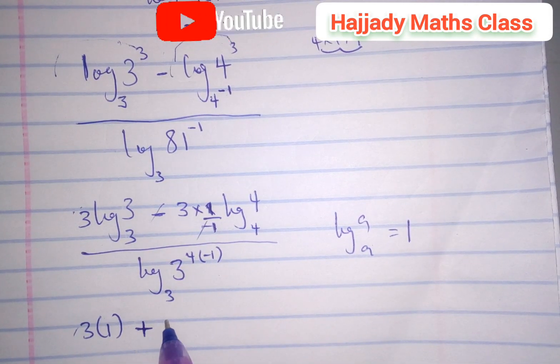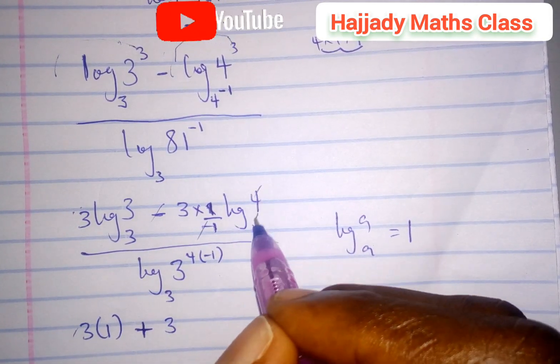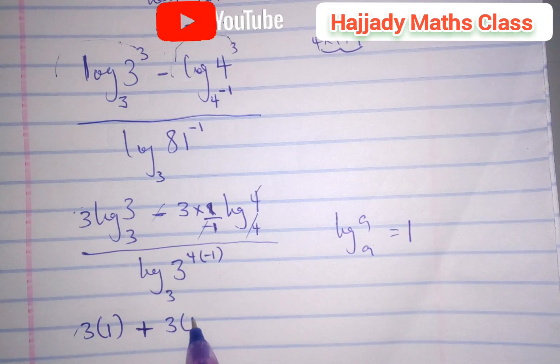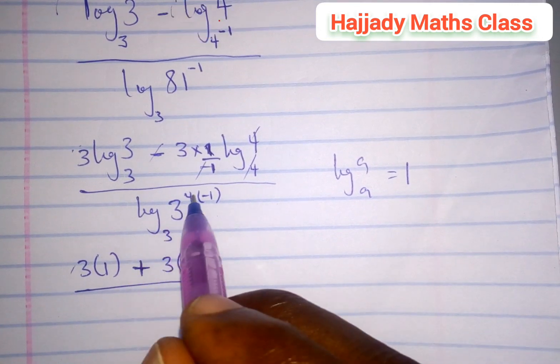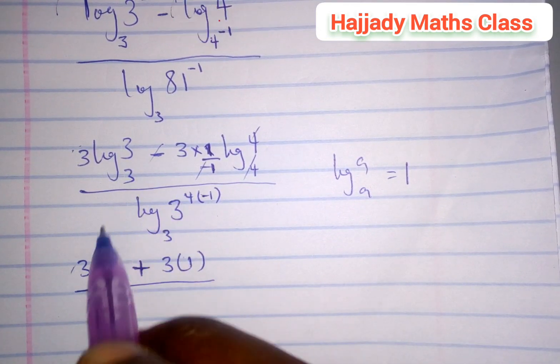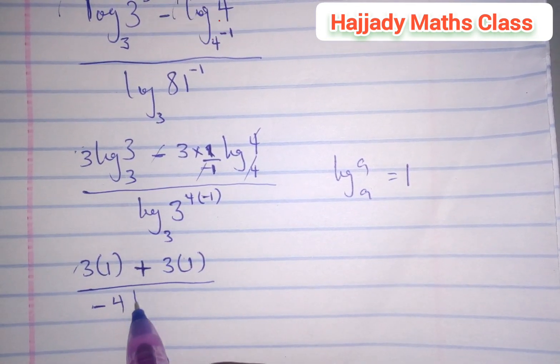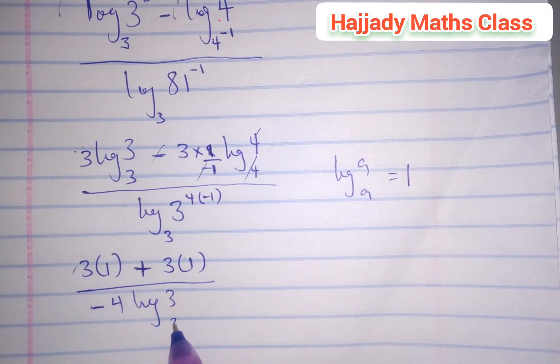Log 4 base 4 cancels out to give 1, divided by minus 4 coming to the back. We have minus 4 log 3 base 3, which is also equivalent to 1.